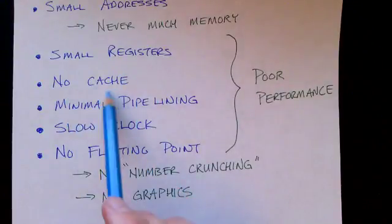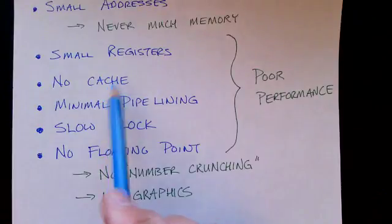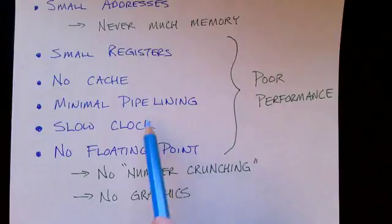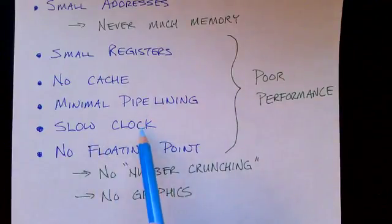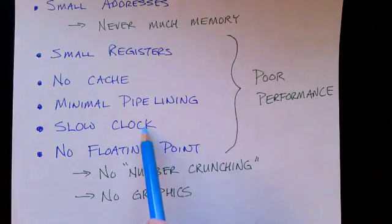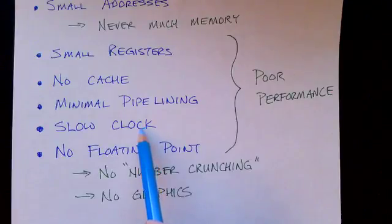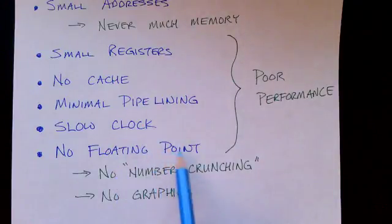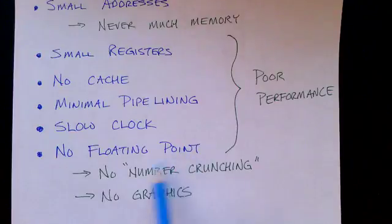There is no cache memory on the system. There's a minimal pipeline with only two stages. The clock frequency is generally quite slow. Sixteen megahertz is really quite slow compared to a one gigahertz Intel processor. And there are no floating point instructions, so you're not going to do any kind of serious number crunching. This precludes any kind of graphics operations.